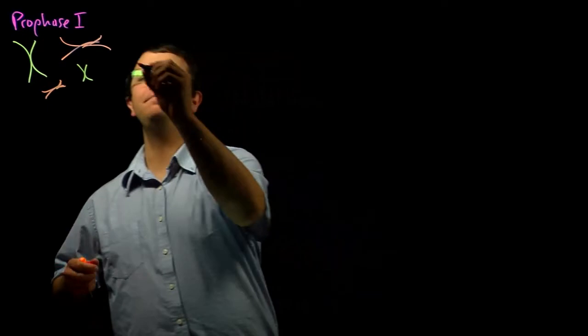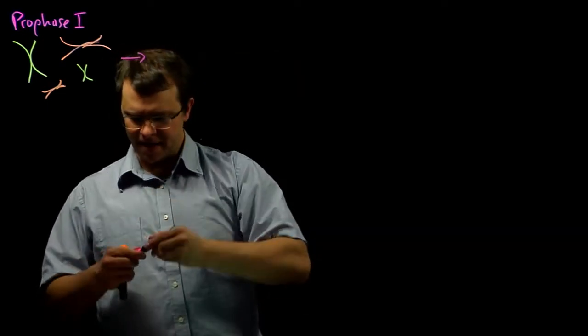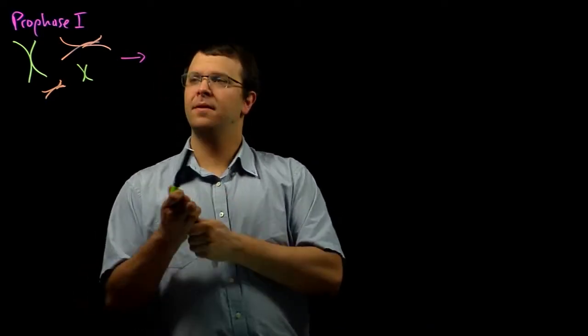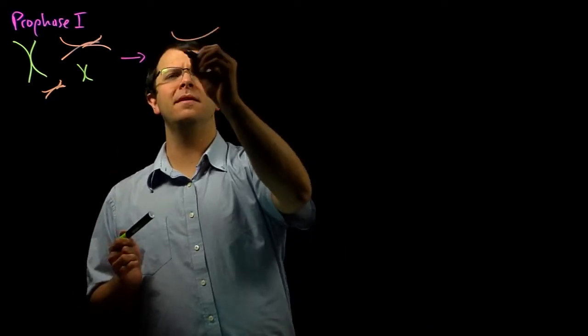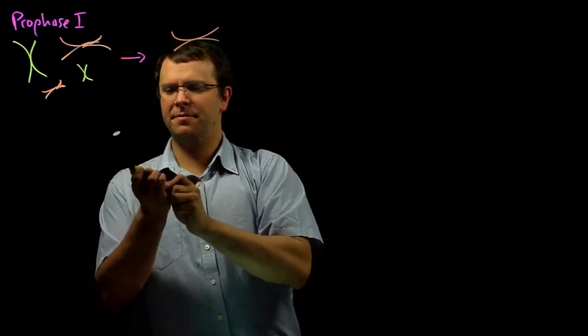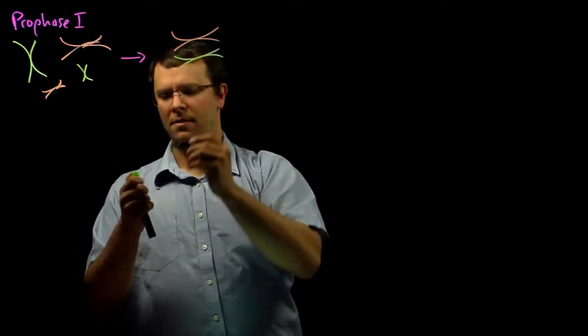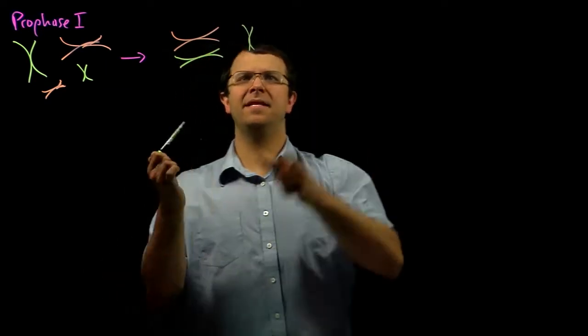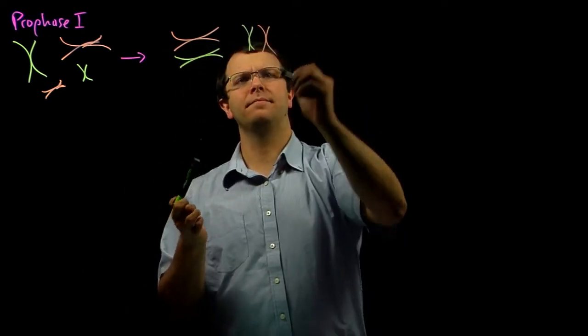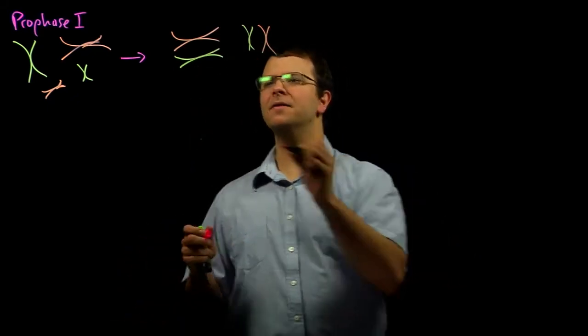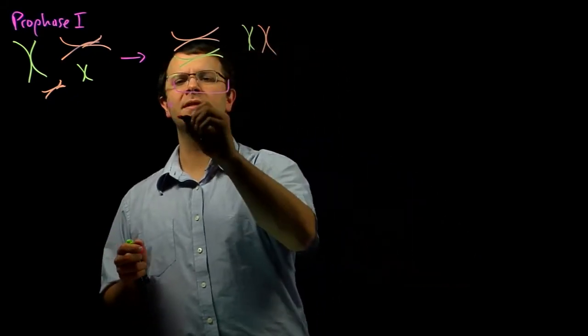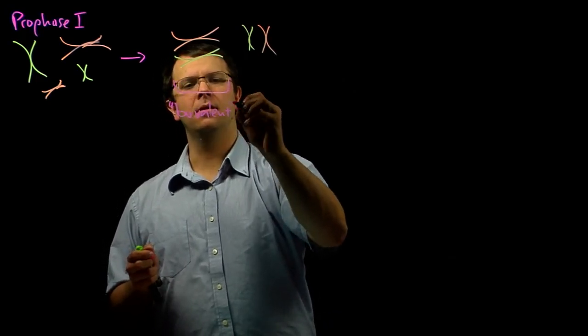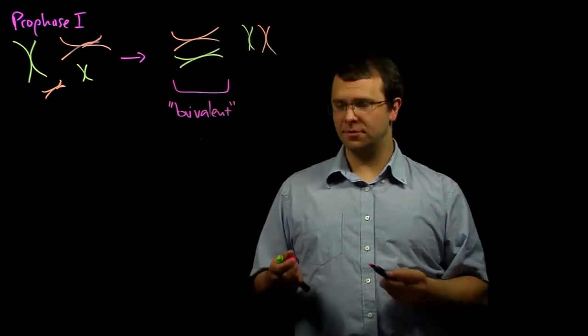And then what happens is homologous pairs line up with each other. And so, for example, perhaps pair number one is going to line up like this. And pair number two will line up like this. We call each of these pairs of homologous chromosomes a bivalent, bivalent for two parts or two sides.